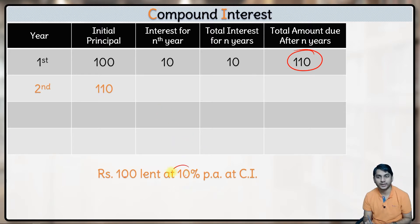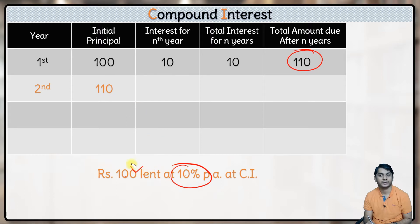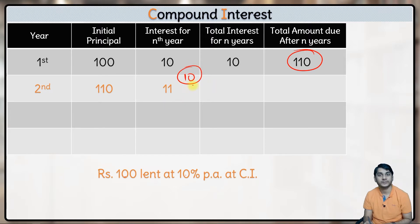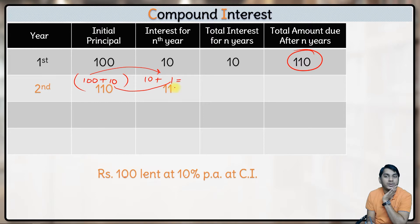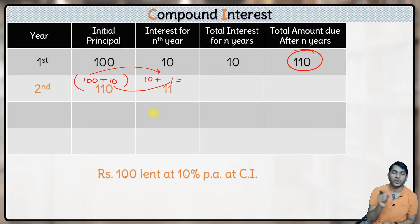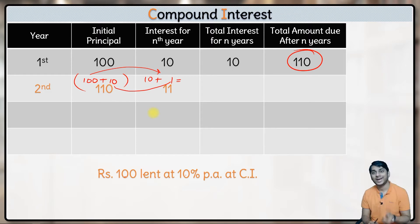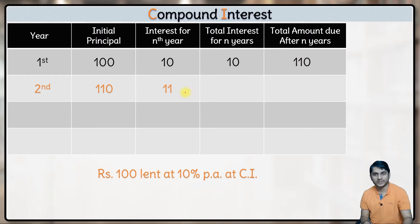Now the second year's interest will be 10% of 110 rupees — not 10% of 100 rupees. 10% of 110 rupees is 11 rupees. In simple interest this was 10, because we only charged interest on the principal. But now, of the 110 rupees, 100 is the initial principal and 10 is the first year's interest. So 10% on 100 is 10 rupees, plus 10% on that interest gives 1 rupee more — total interest becomes 11 rupees. Interest on interest is being charged — this is called compound interest, or 'chakravridhi byaj' in Hindi. The principal changes every year, and hence the interest also changes every year.